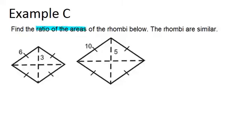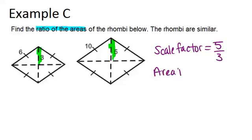To do that, we look for corresponding sides. For example, 3 and 5, or we could use 6 and 10. Even though 3 and 5 aren't actually sides of the rhombus, as long as you use any two corresponding parts, it's fine. So the scale factor will be 5 over 3. Therefore, the area ratio will be 5 over 3 squared, which is 25 over 9.